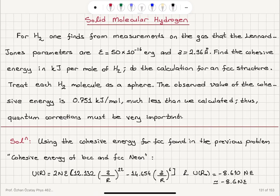This was the Lennard-Jones potential with the proper lattice sums, and the cohesive energy was U(R) = -8.6Nε.